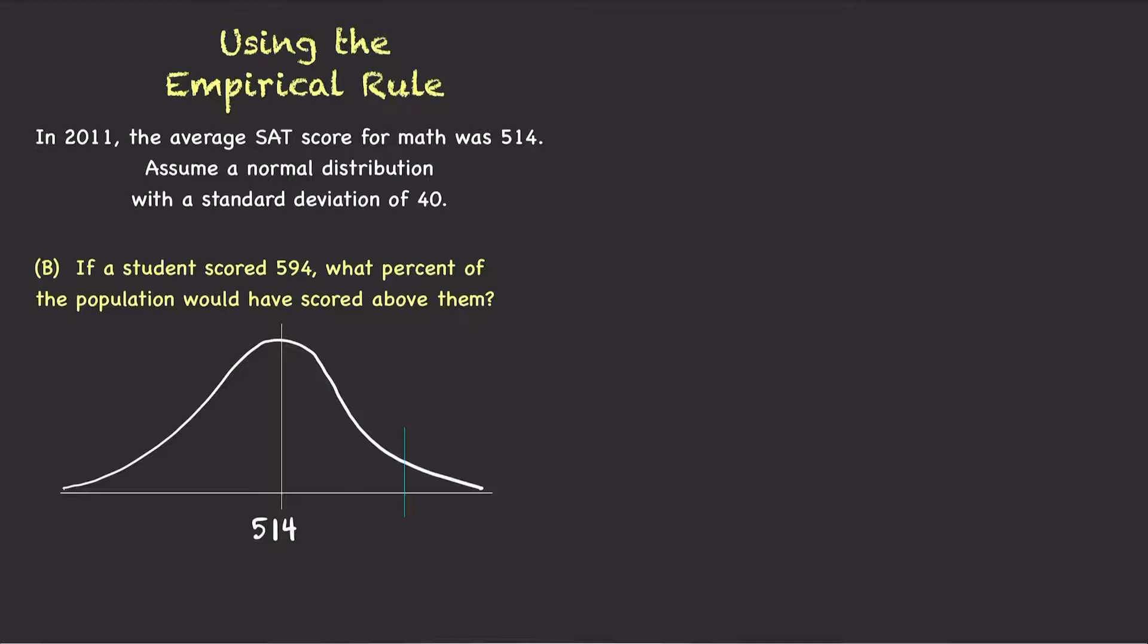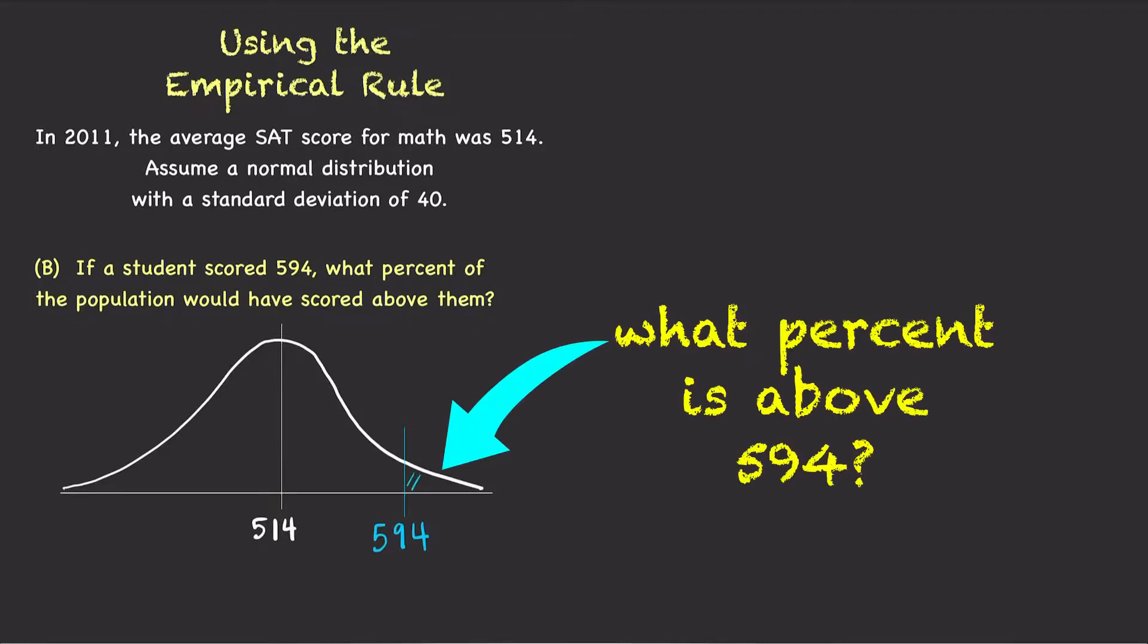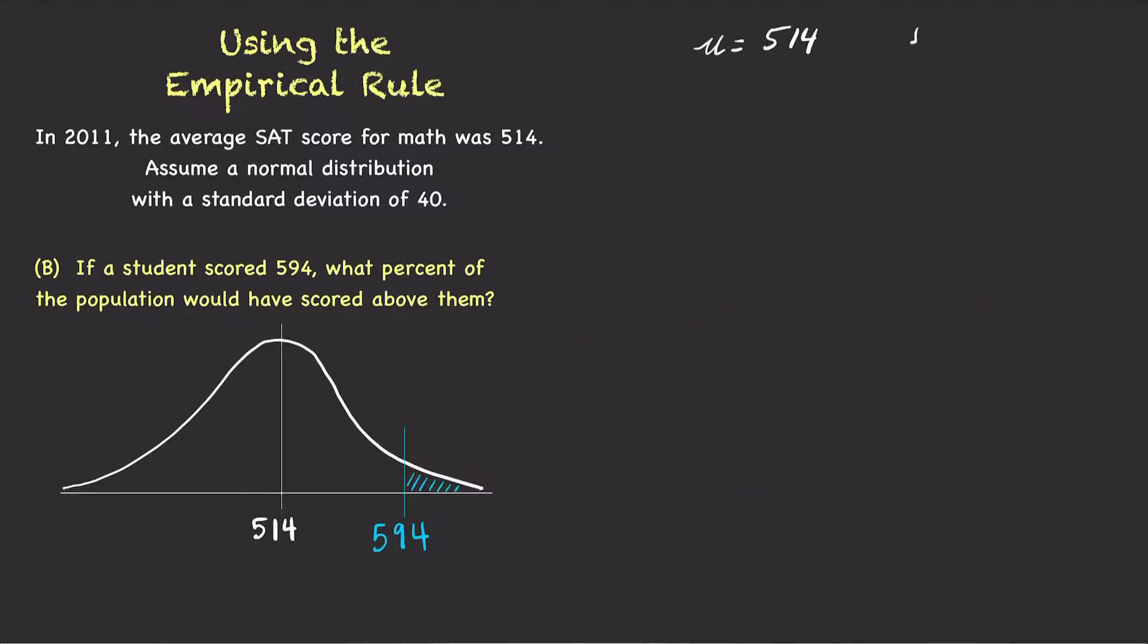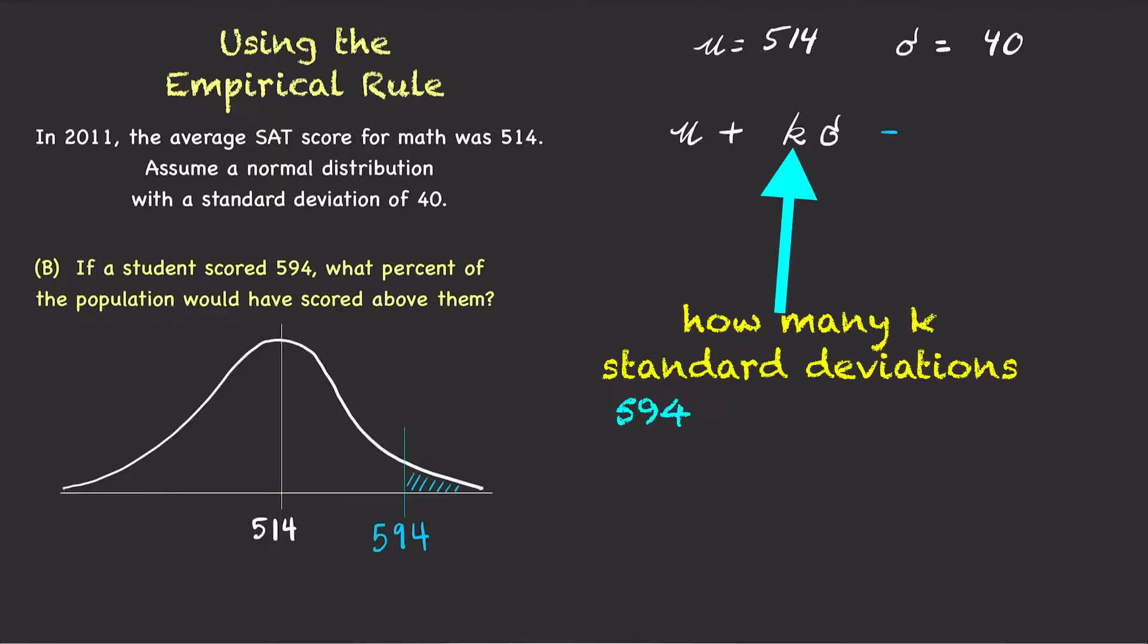If a student scored 594, what percent of the population would have scored above them? To answer this question, we need to know how many standard deviations 594 is away from the mean.